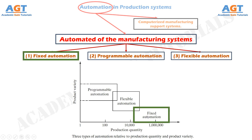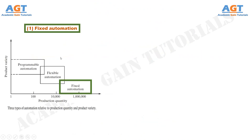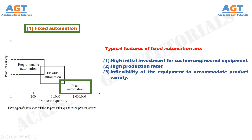Fixed Automation is a system in which the sequence of processing or assembly operations is fixed by the equipment configuration. Each operation in the sequence is usually simple, involving perhaps a plain linear or rotational motion, such as feeding a rotating spindle. Typical features include: high initial investment for custom engineered equipment, high production rates, and inflexibility to accommodate product variety. The economic justification is found in products made in very large quantities, where the high initial cost is spread over a large number of units, minimizing unit cost. Examples include machining transfer lines and automated assembly machines.